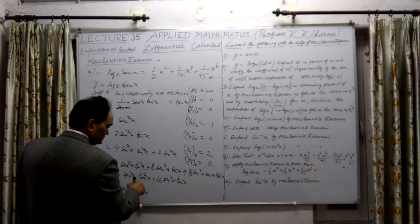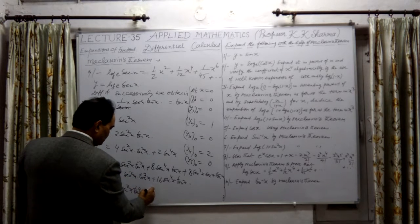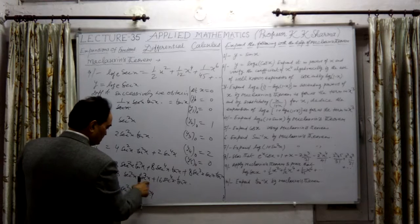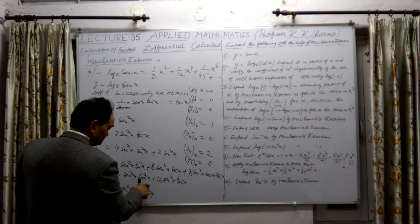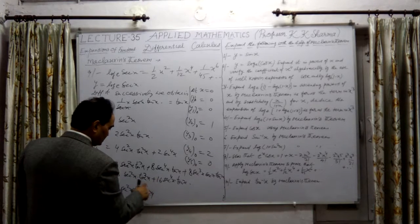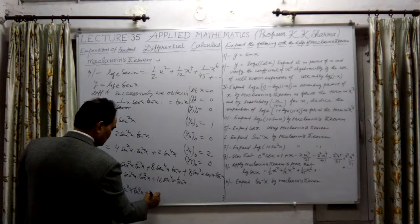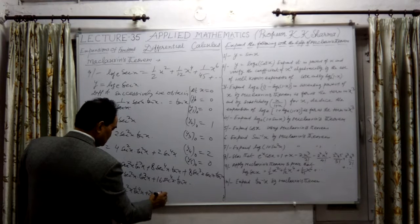Plus now 10x is differentiated: 8 into 3 into 4 into 10x will come. 10x is further differentiated - 2nd square x will give 2nd 4x into 10 square x.